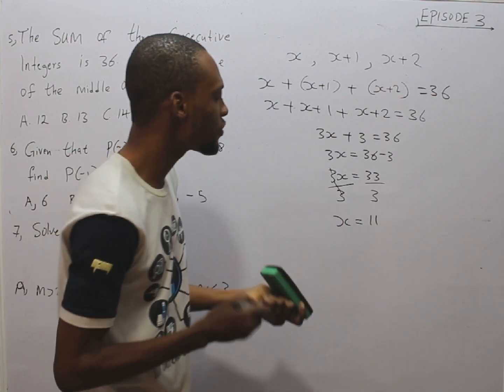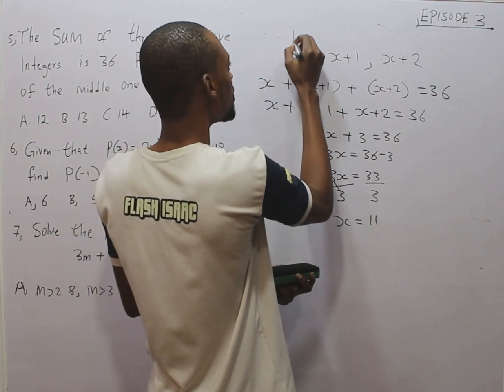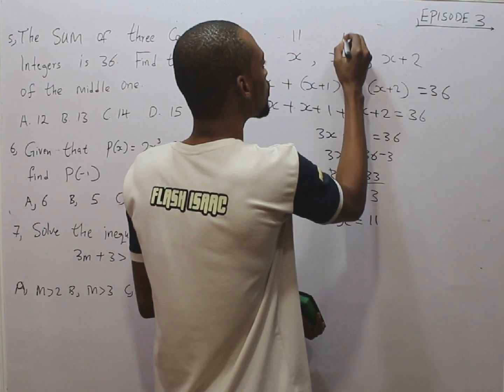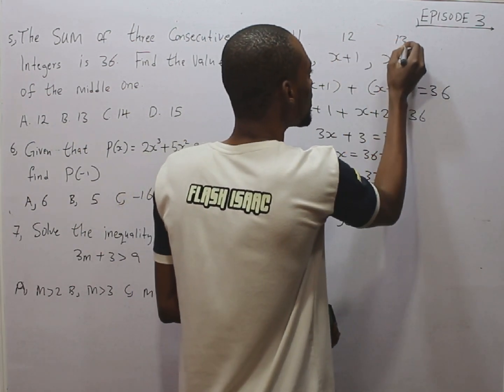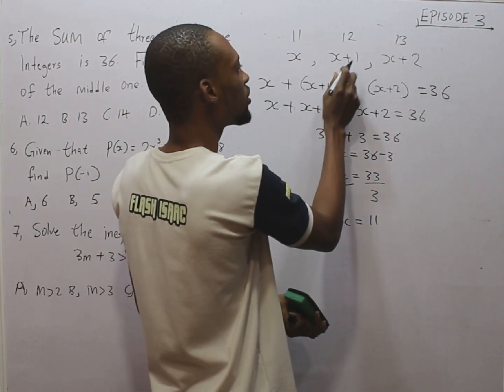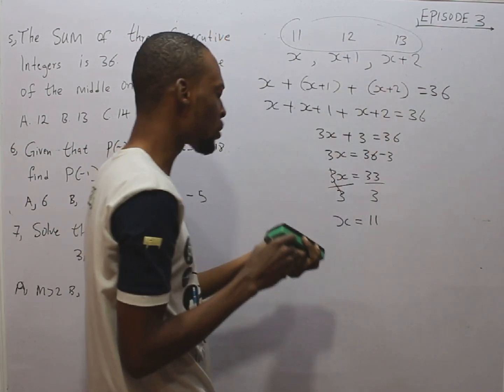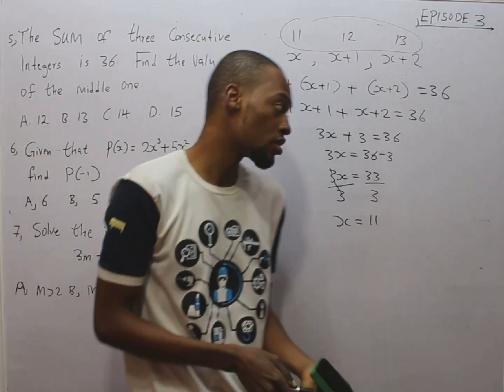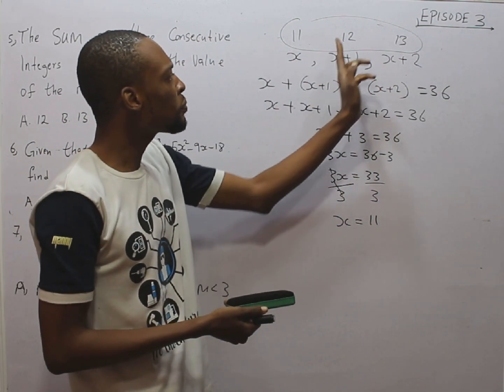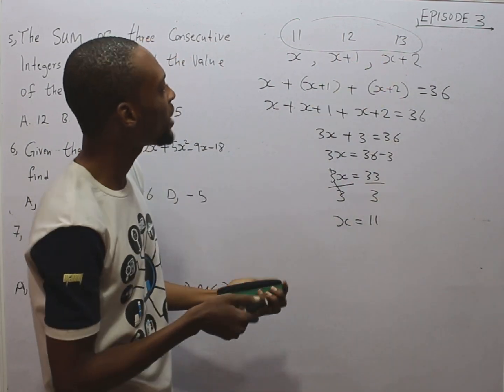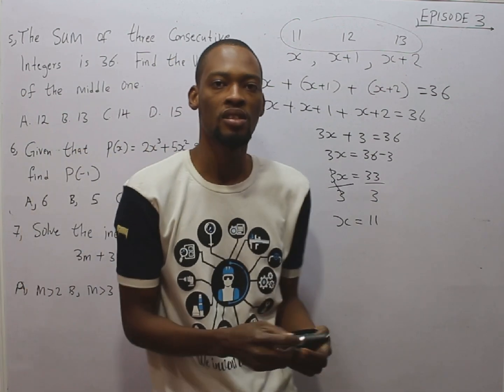So, putting x as 11, the first number is simply 11. The second one is 12. And the third one is 13. 11 plus 12 plus 13. First, you may want to confirm if your answer is correct. 11 plus 12 plus 13. Would that give you 36? Yes. So it is correct.